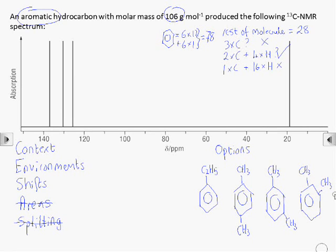Now, we can use the carbon-13 NMR to help us select between these, starting with the chemical shift and the number of environments. So we've got four different peaks, so four different carbon environments.